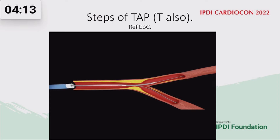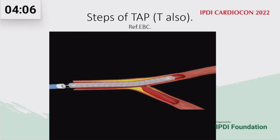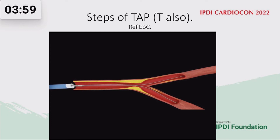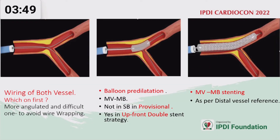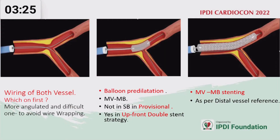This is the steps of TAP taken from the EBC website: wiring of both vessels, predilatation of the main vessel, extending the main stent to the main branch. If we go for upfront two-stent strategy, both branches should be balloon dilated. If there is provisional stenting, only the main branch should be dilated. Then stent from the main vessel to the main branch, keeping the wire jailed. Stent size should be as per the distal vessel.